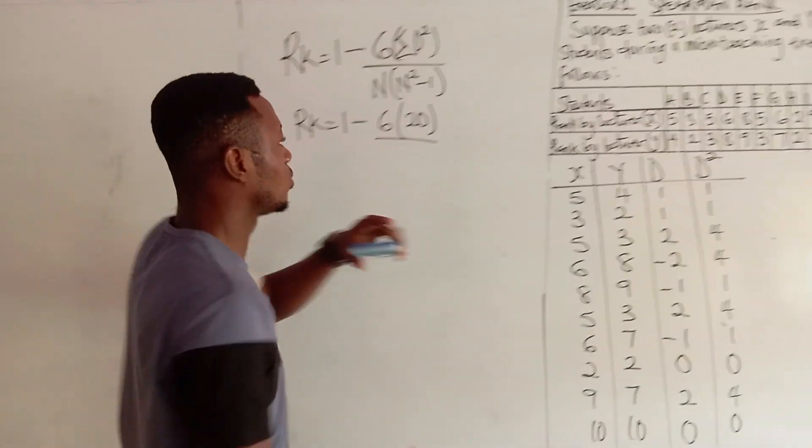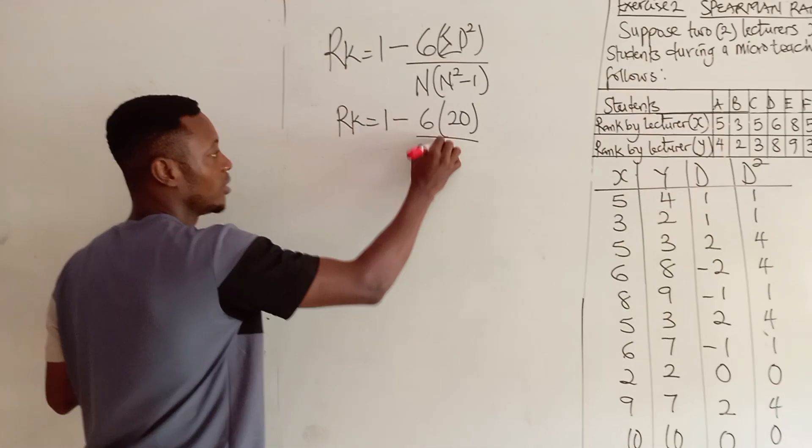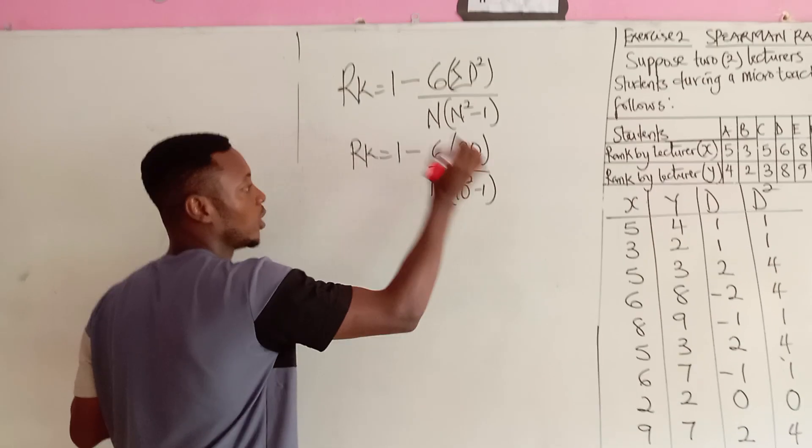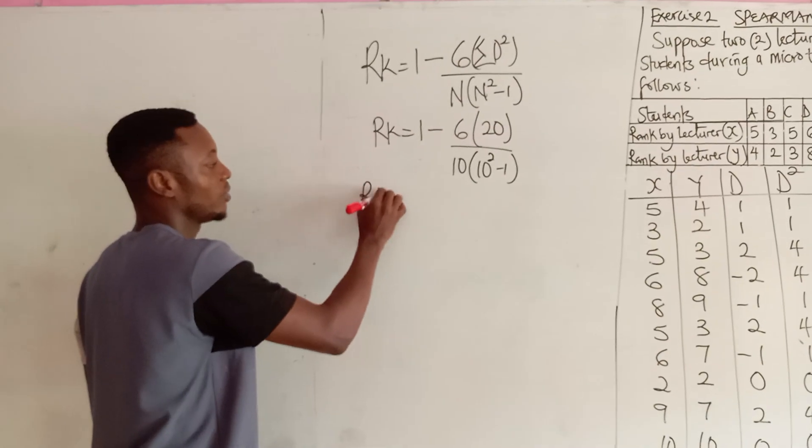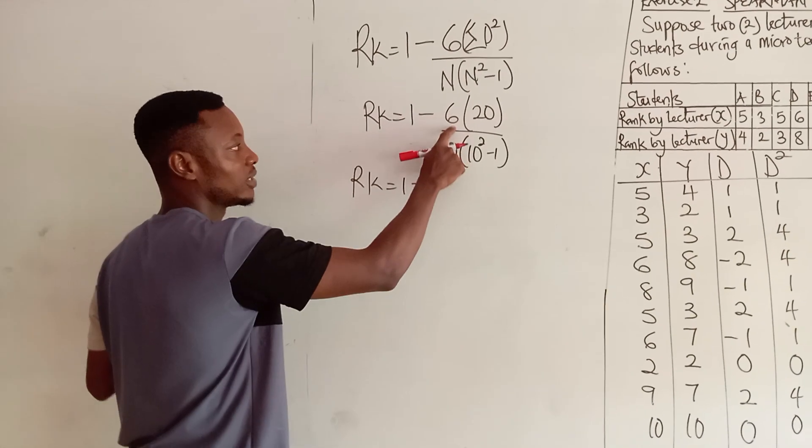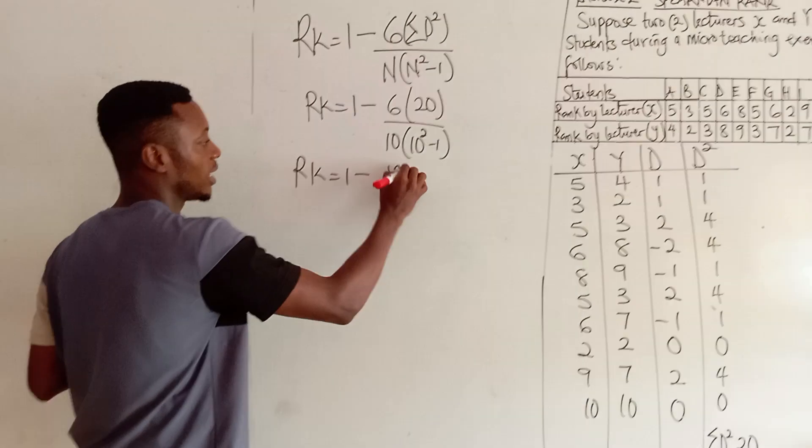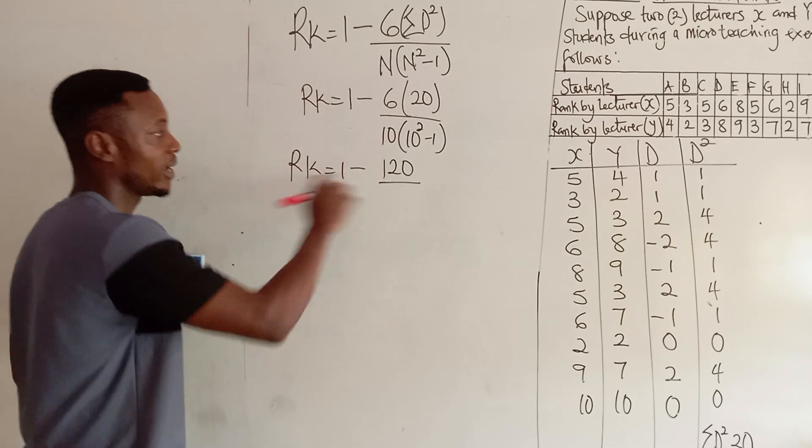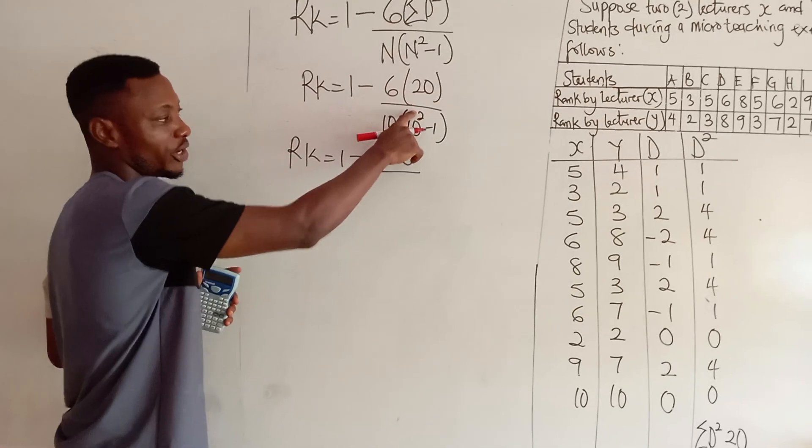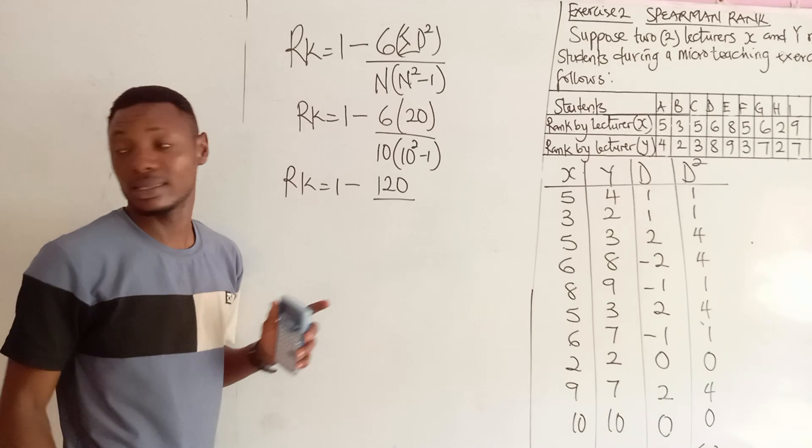So I'll bring my 20 here divided by the number of data we have because the data is giving us up here as 10 students. So, we have 10, open bracket, 10 squared minus 1. This will then give me rank is equals to 1 minus 6 multiplied by 20. It will definitely give us 120 divided by 10 squared is 100. 100 minus 1 is 99.